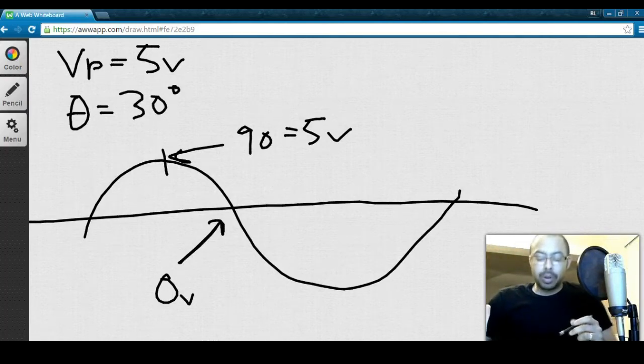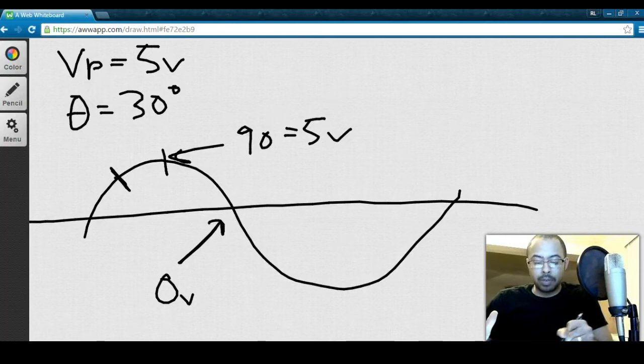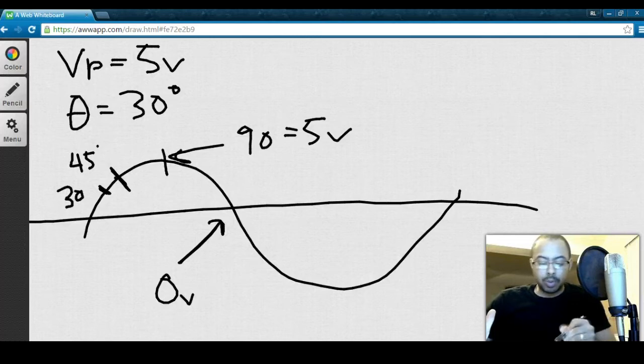Alright, well, 30 degrees is going to fall before 90. We can guesstimate that 45 will be about right here. And so 30 is going to be right here. So, somewhere between here and here is going to be our 30 degree point. And that's what we want to calculate voltage for.